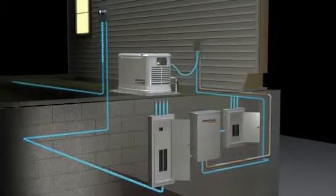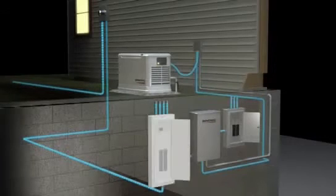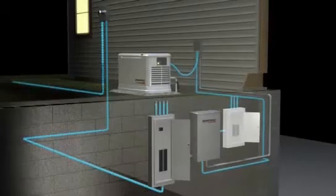With a traditional generator installation, three boxes are required: the main circuit panel, the automatic transfer switch, and the emergency circuit panel.